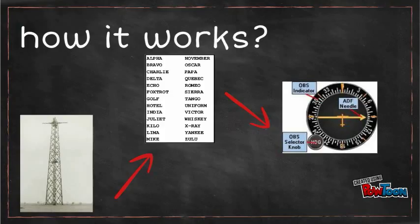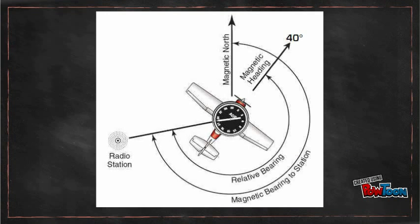The aircraft will tune the NDB's frequency to receive its signal. After the call sign is identified, the bearing indicator will indicate the direction of the aircraft to the NDB station.